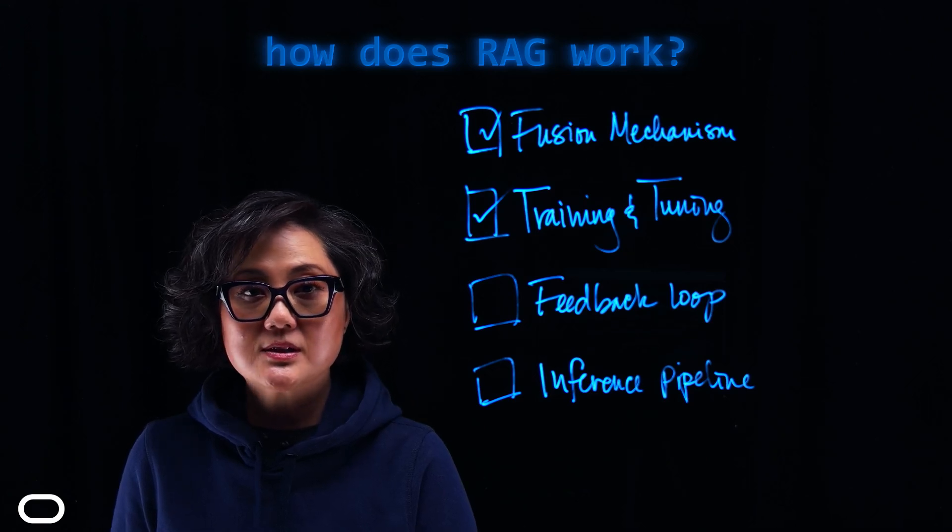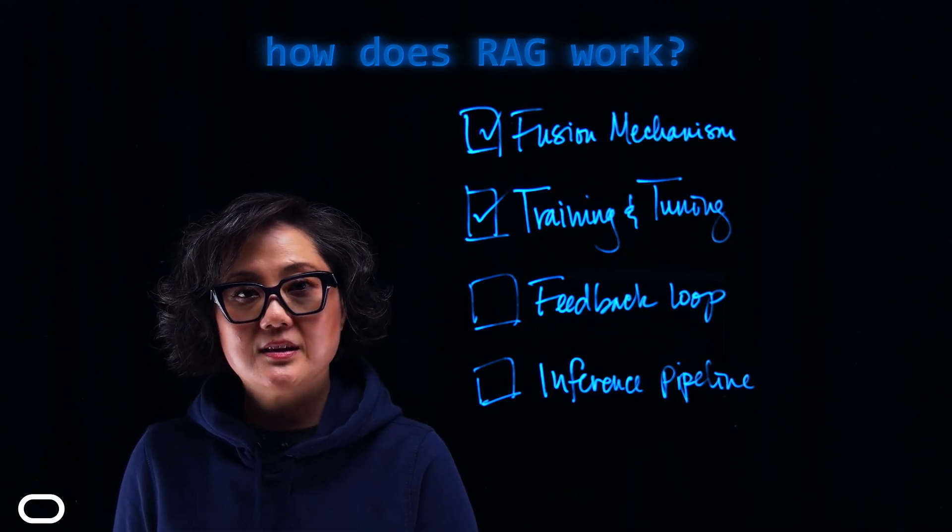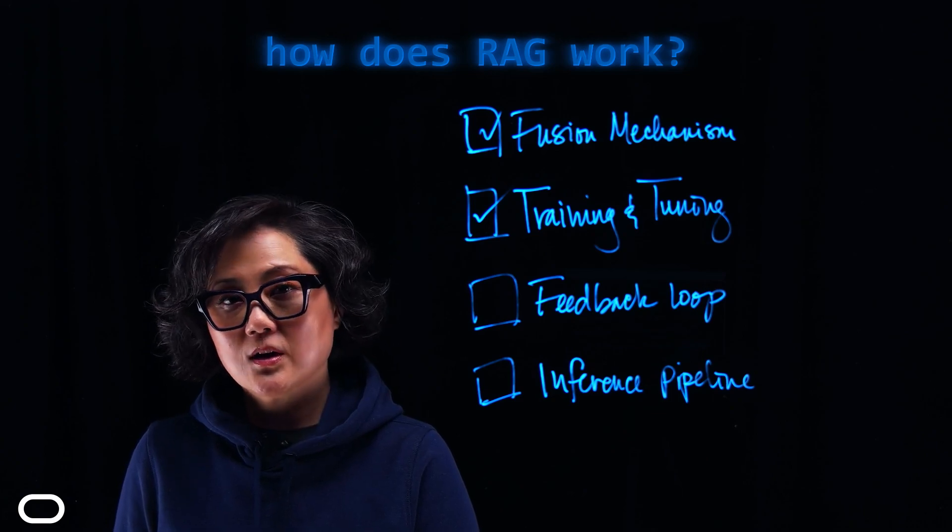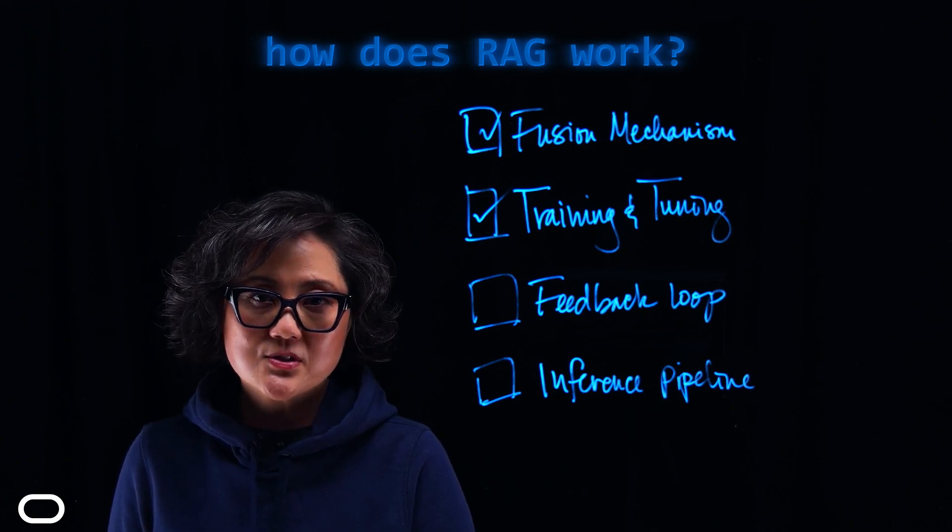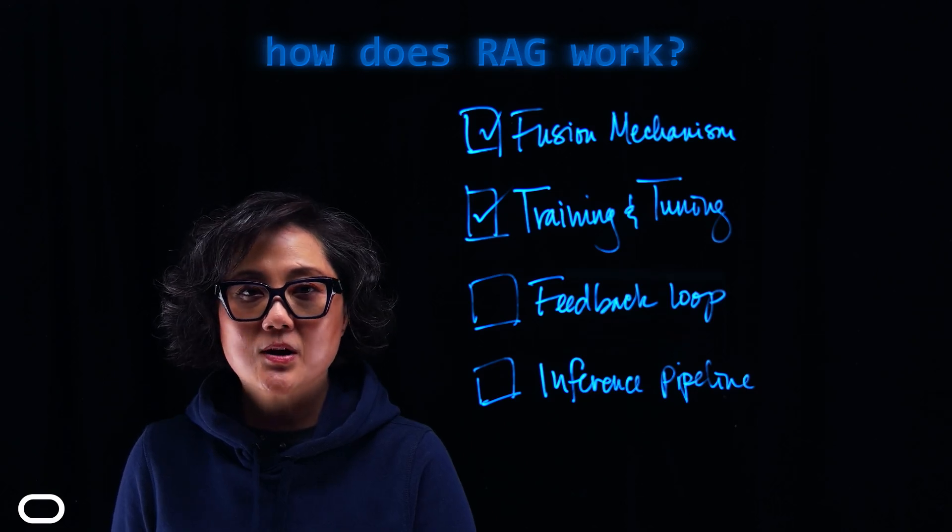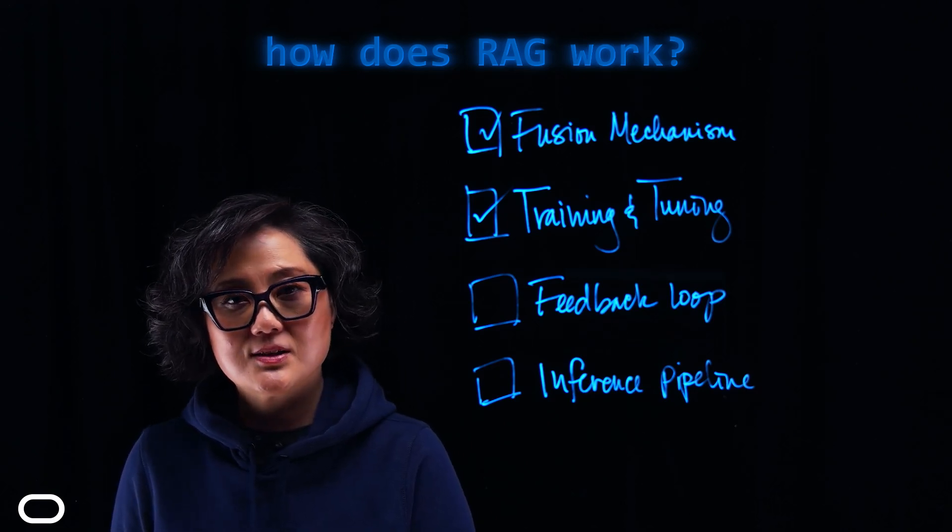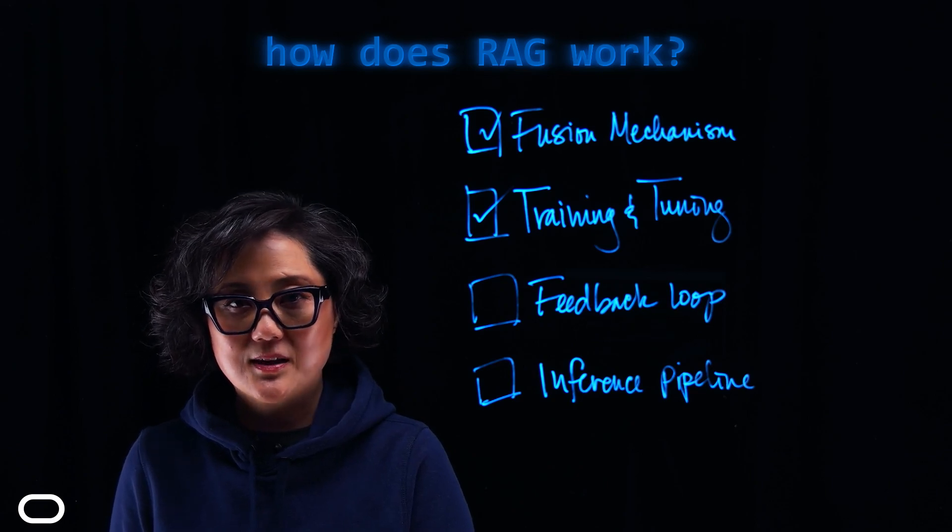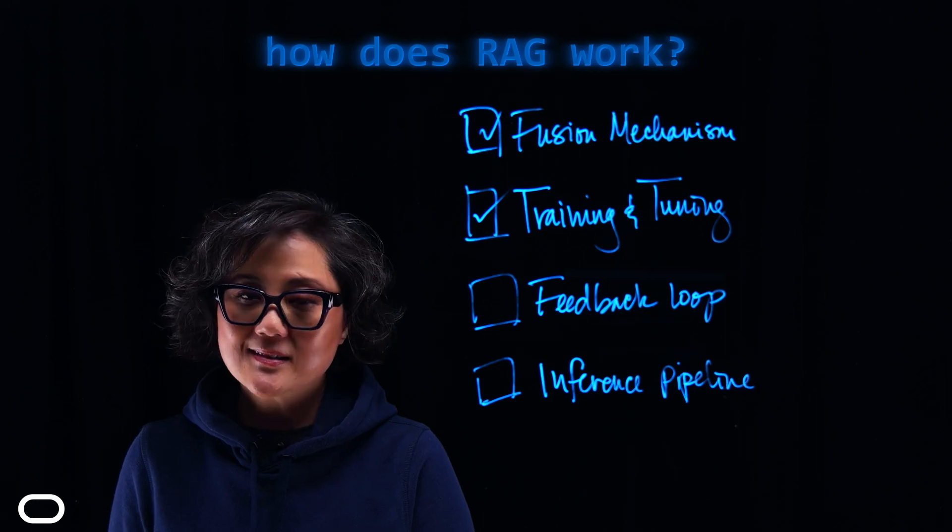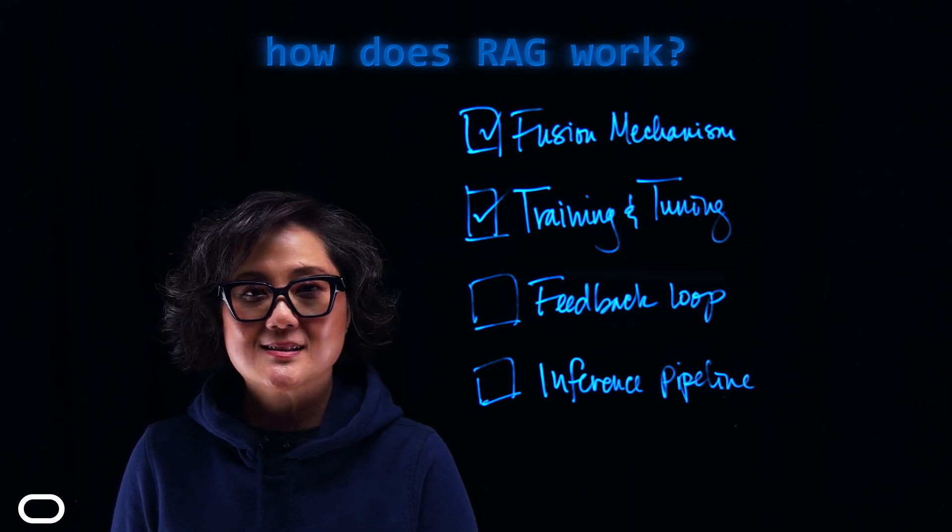Or we could use cross-entropy loss for generation, which measures how well the model's predicted probability distribution aligns with the true distribution of the target labels, which means we're checking to see how well the model performs against expectations.